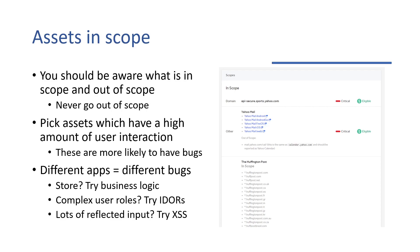You want to be picking assets which have a high amount of user interaction. The more user interaction an app has, the more likely it is to find bugs. You can find bugs on more static websites, but the bugs that exist there are way more technical — they expect you to know far more about what the app is running in the back, like knowing that WordPress has a WP-admin folder. It's unlikely for you to find a bug as a beginner on assets that just don't have a lot of user interaction, because there's not a lot you can really poke at.